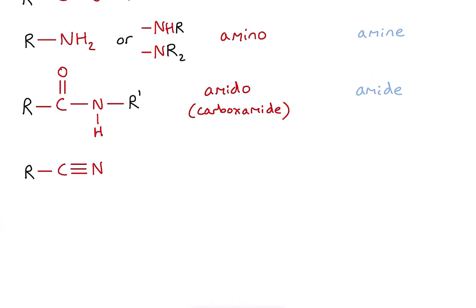Finally, the last one you might need to know: we've got a carbon triple bonded to a nitrogen at the end of my chain. That is called a nitrile functional group, and conveniently it belongs to the class of compounds called nitriles. And those are all the ones you're going to need to know for A-level chemistry. Hopefully this video is of some help.